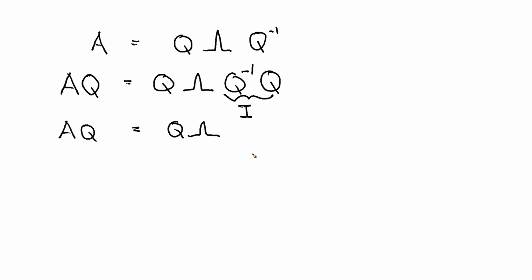Now let's multiply on the left by Q inverse. So Q inverse AQ is equal to Q inverse Q lambda. We've seen that before. That's I, right? Which means that Q inverse AQ is equal to lambda.